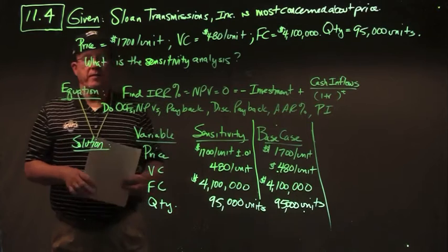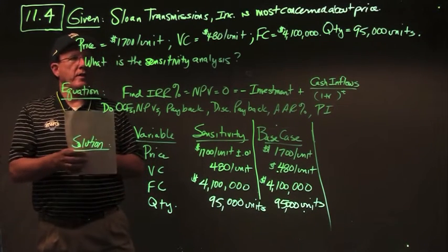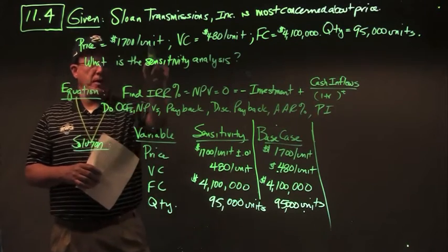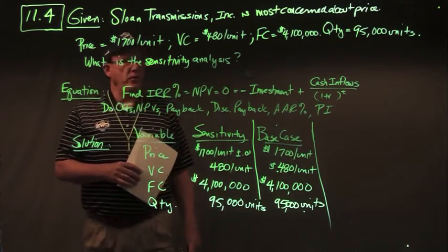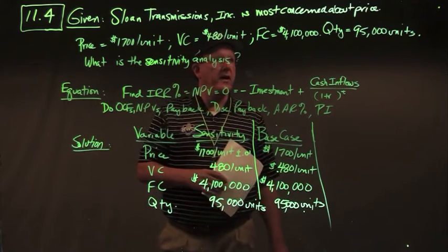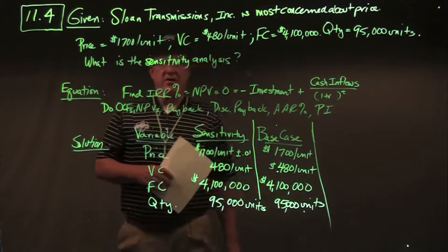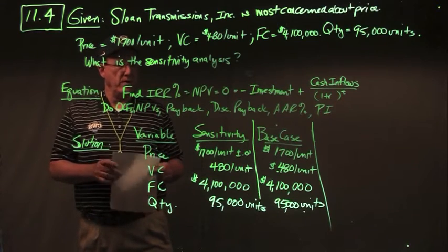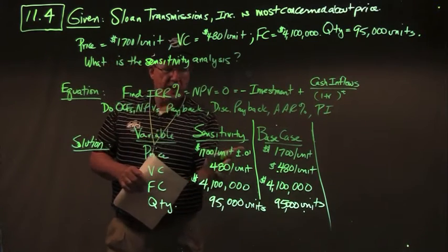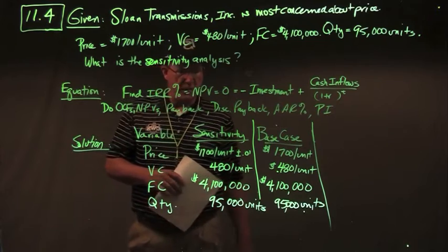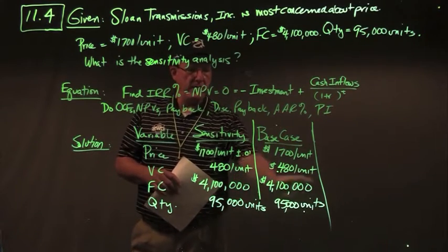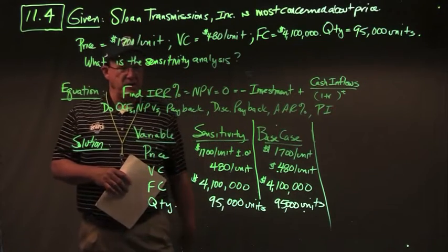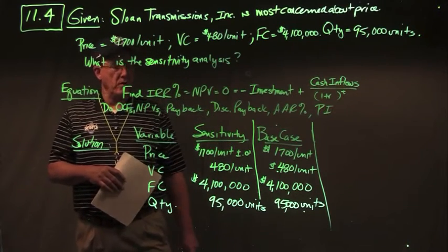In problem 11.4, Sloan Transmissions is most concerned about their price of $1,700 per unit. Variable costs are still $480 per unit, fixed costs $4.1 million, quantity 95,000 units. For sensitivity analysis, we change only the price and hold all other variables constant — listing base case values and only varying the price.